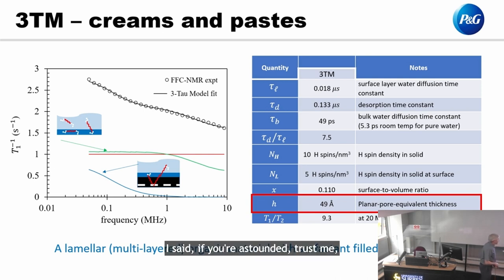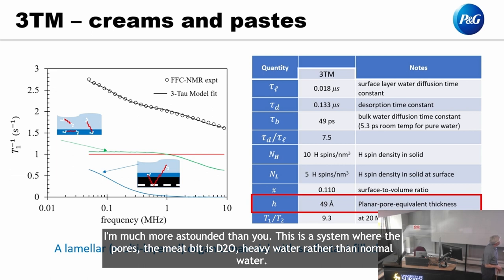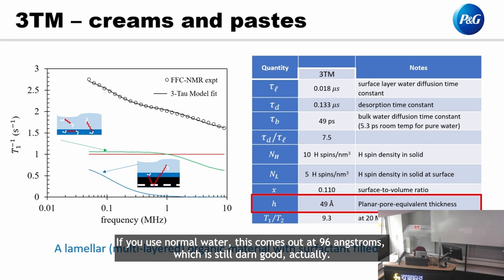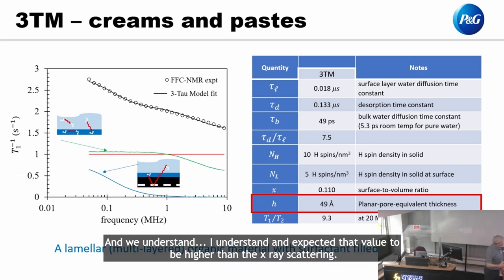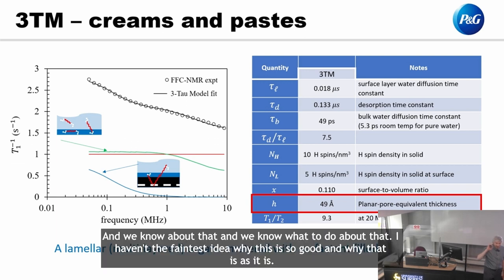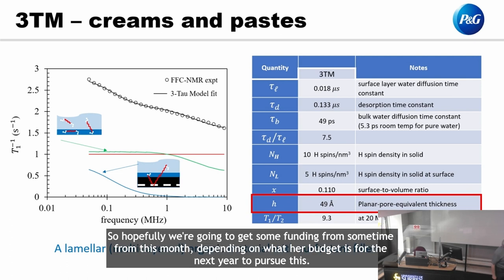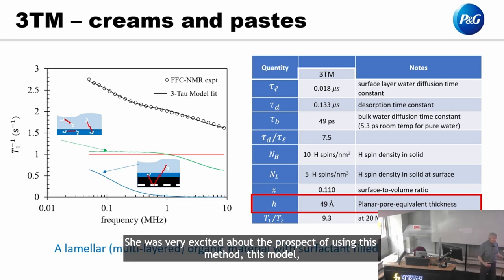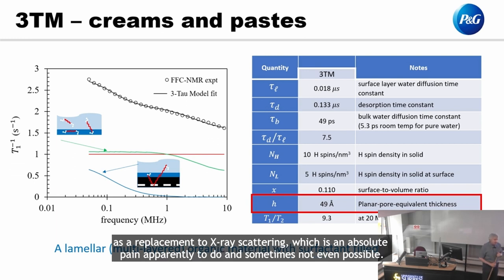That result is astounding — her words, not mine. I said if she's astounded, I'm much more astounded than her. This is a system where the bulk water is D₂O — heavy water — rather than normal water. If you use normal water, this comes out at 96 ångströms, which is still good. We understand and expected that value to be higher than the x-ray scattering, but I haven't the faintest idea why this particular result is so good. We're hopefully going to get some funding to pursue this — she was very excited about using this method as a replacement for x-ray scattering, which is apparently an absolute pain to do, and sometimes not even possible.